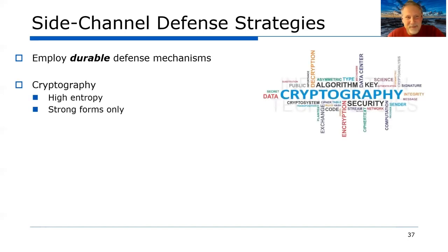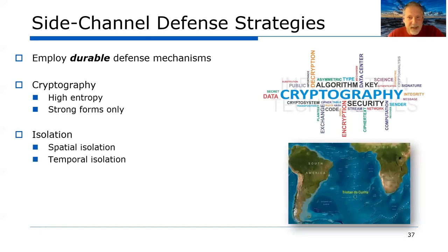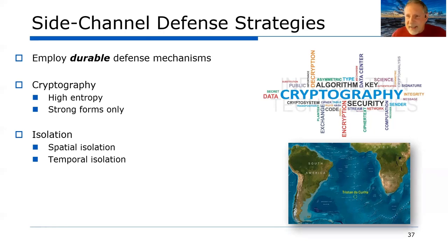So what do you do? How do you stop information from leaking through side channels? You need durable mechanisms: low-entropy crypto is not durable and easily breakable. You need high-entropy, strong cryptography applied to these systems, and you need isolation — physical isolation, either temporal or spatial. In my mind, those are really the only two mechanisms that are durable.